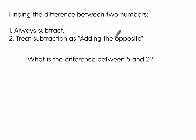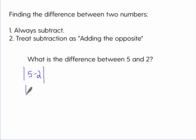Let's do some examples of finding the difference between two numbers. The first thing is you always want to subtract, and we treat subtraction as adding the opposite. What is the difference between five and two? This is the equivalent of taking the absolute value of five minus two. Treating subtraction as adding the opposite, five plus negative two gives us the absolute value of three — the answer is just three.